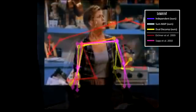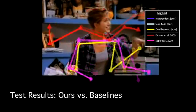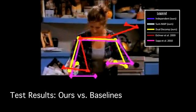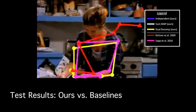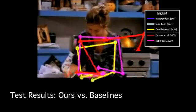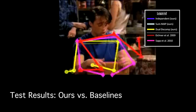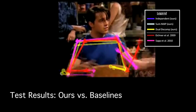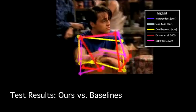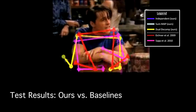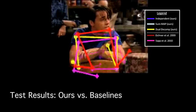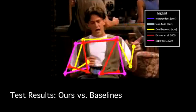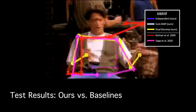Here we compare our three methods of combining the ensemble against two state-of-the-art single frame methods. As can be seen, the single frame methods are both qualitatively worse at capturing the movement, and also significantly less accurate at predicting the locations of elbows and wrists.